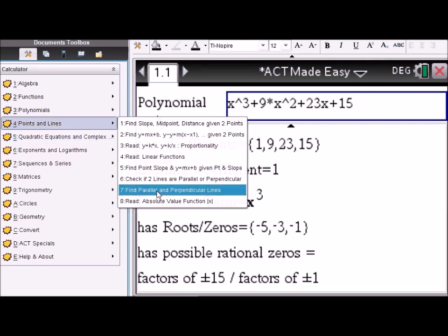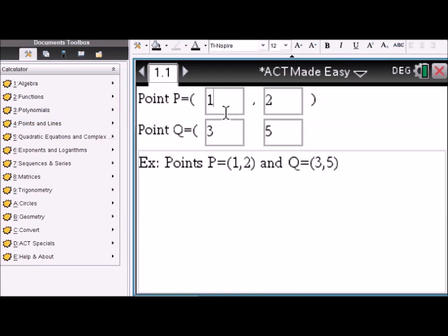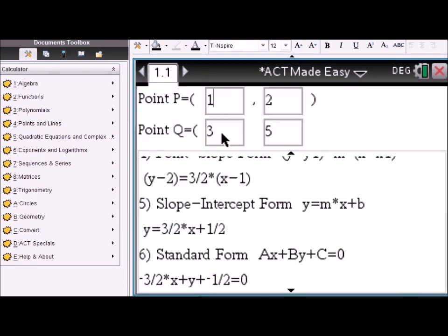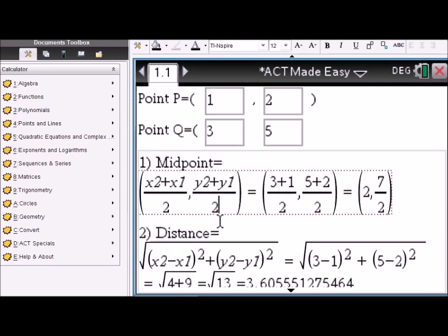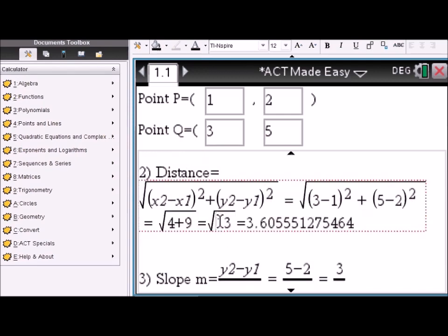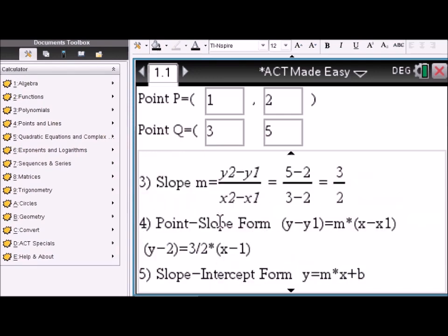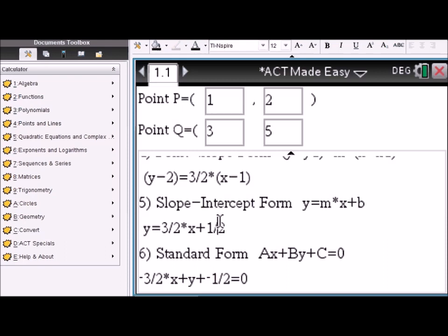Points and lines. Say you're given two points: one, two, three, four or three, five. You enter them here and you will quickly see, scroll up, the midpoint, the distance and the slope, and also the equations passing through the two points in point-slope form, slope-intercept format, or standard form. Very handy.